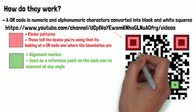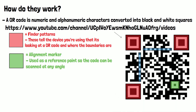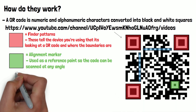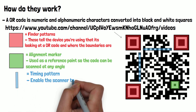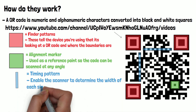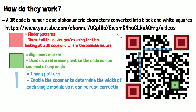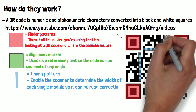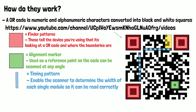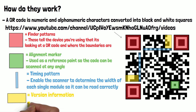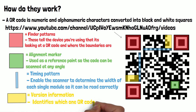The timing pattern here runs horizontally and vertically from the finder patterns and enables the scanner to determine the width of each single module so it can be read correctly. This section here contains the version information, as there are several different types of QR code. The one we are looking at is the most common and is known as a static QR code.